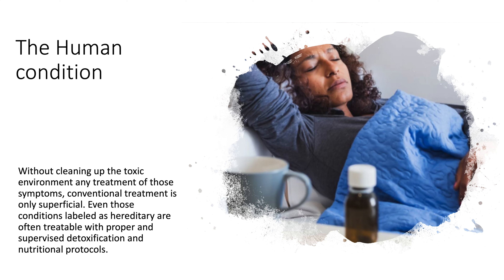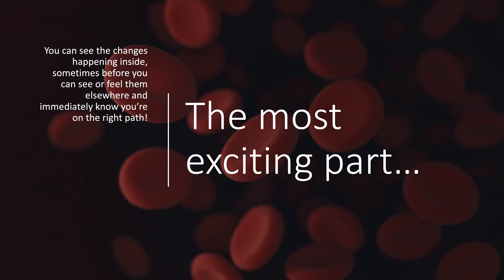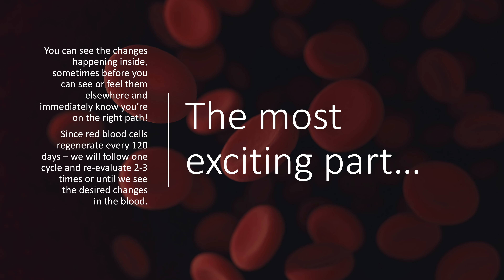Even those conditions labeled as hereditary are often treatable with proper and supervised detoxification and nutritional protocols. The most exciting part? You can see the changes happening inside, sometimes before you can see or feel them elsewhere, and immediately know you're on the right path. Since red blood cells regenerate every 120 days, we will follow one cycle and re-evaluate two to three times, or until we see the desired changes in the blood.